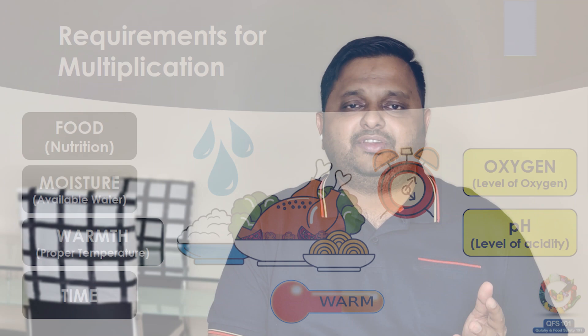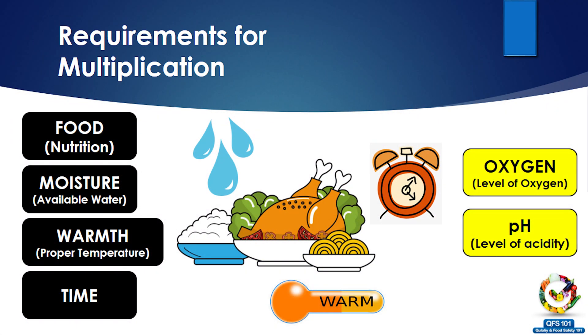So what are the resources which microorganisms need to grow? They are very simple: food, moisture, proper temperature, and time. These are the four biggest factors necessary for the growth of bacteria. If these requirements are not there, microorganisms will not grow. In addition, there are two smaller factors as well — oxygen level and pH, which is the acidity level.